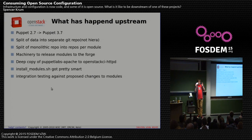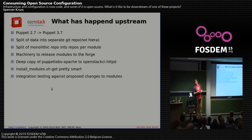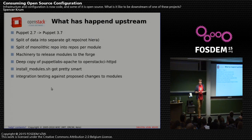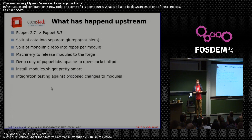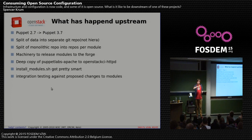It also means that when someone pulls down our configuration to use downstream, they just add their own Git repository of config files. We've split the monolithic repo into individual module repos — 61 new modules were just announced. There's also machinery to release modules to the Puppet Forge using Puppet Blacksmith, similar to how PyPI releases work: push a signed Git tag, machinery fires, and a new version ends up on the Forge.